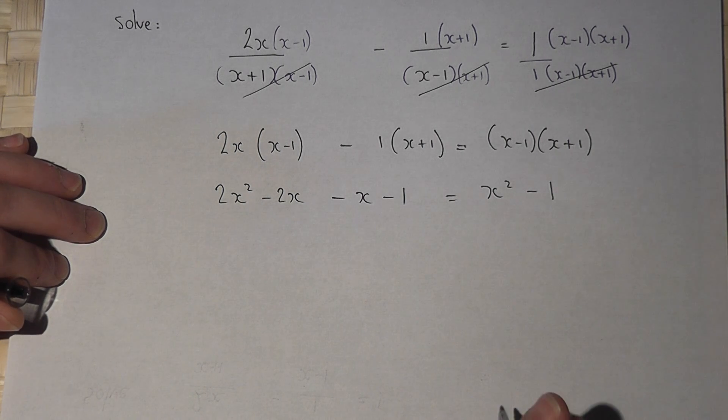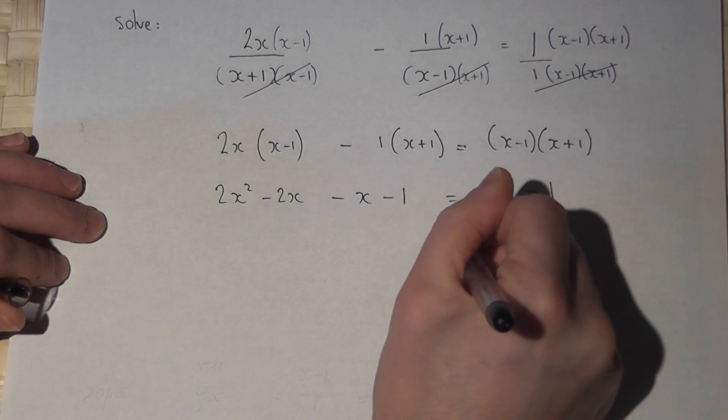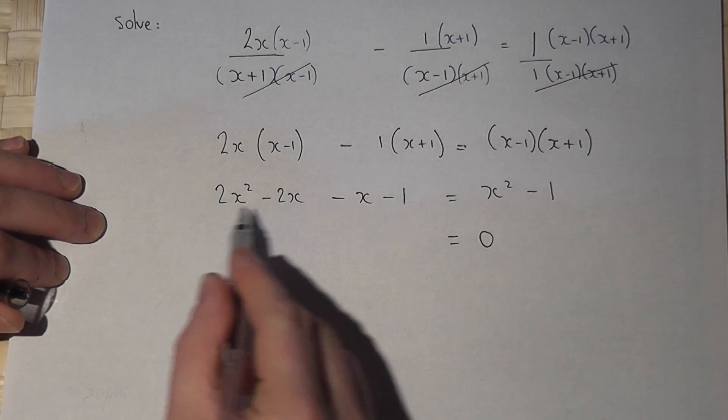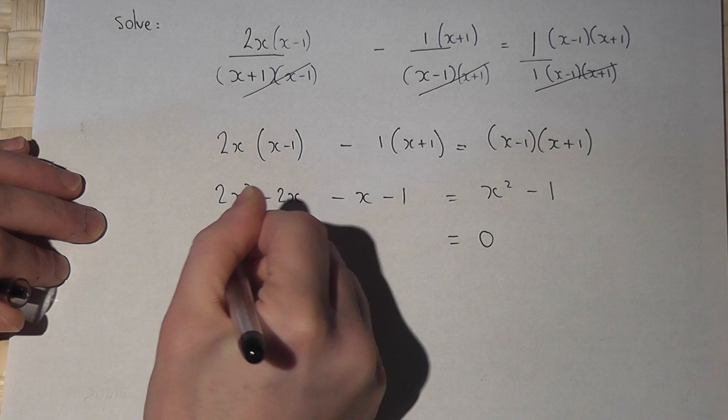This is then a quadratic equation, so I want it to equal 0. So I'll take away x squared from both sides. That leaves 1x squared.